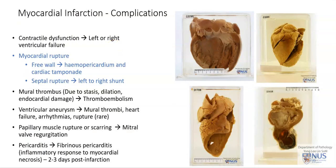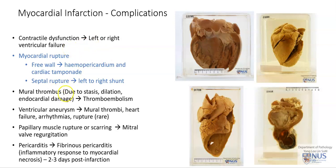Complications can occur in the acute phase post-infarction, or there can be chronic complications that take months or sometimes even years to develop, such as chronic ischemic heart disease. As a result of myocardial infarction, there can of course be pump or contractile dysfunction, giving rise to left or right ventricular failure, depending on where the area of infarction is.